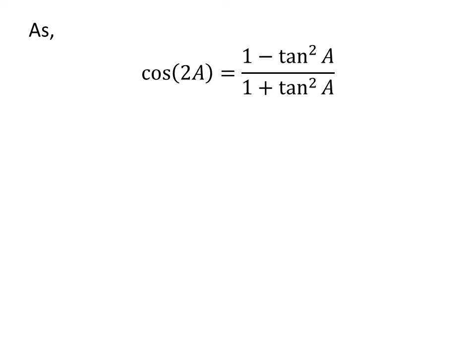We know cosine of 2 times A is equal to 1 minus square of tangent of A over 1 plus square of tangent of A.